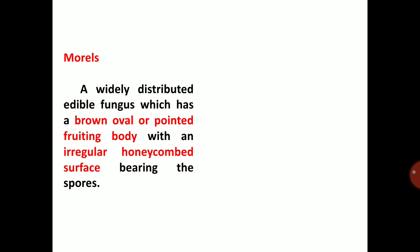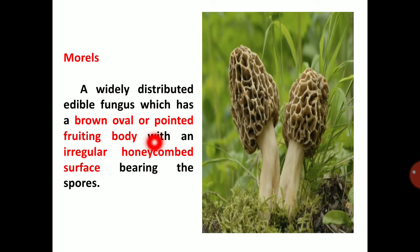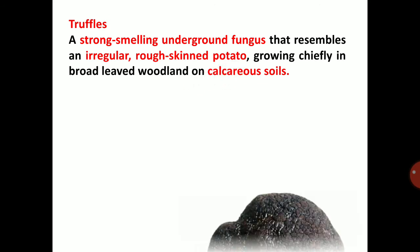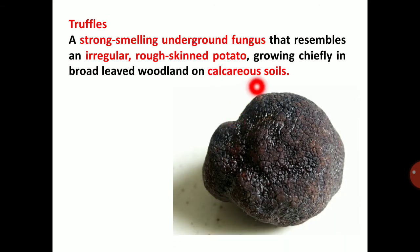Morals are a widely distributed edible fungus which has a brown oval or pointed fruiting body with an irregular honeycomb surface, bearing spores on thin walls. Truffles are a strong-smelling underground fungus that resembles an irregular rough-skinned potato, growing chiefly in broad-leaved woodland on calcareous soil.